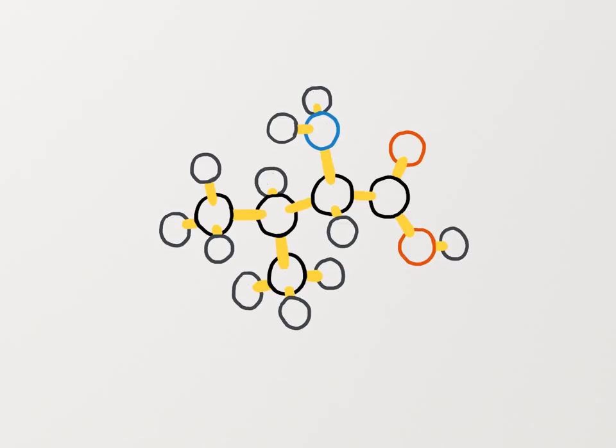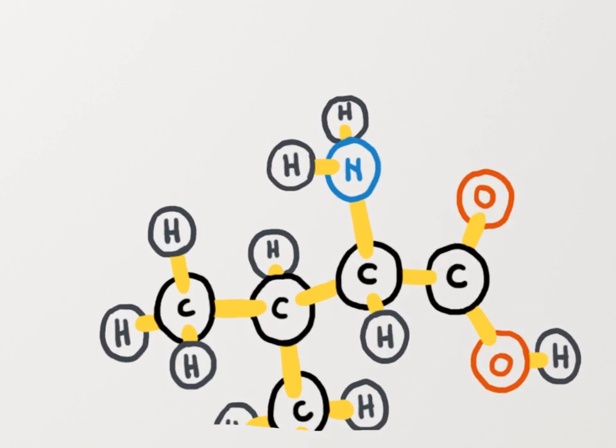In lecture we saw that molecules are groups of atoms that are connected by covalent bonds. So what is a covalent bond exactly? A covalent bond involves the sharing of electrons between atoms.